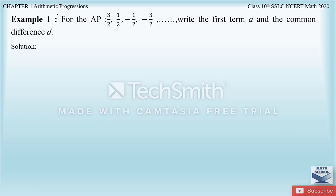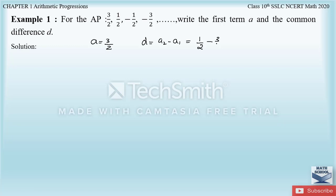Let us solve Example 1 from Chapter 1 on Arithmetic Progressions, which says: for the AP, write the first term a and the common difference d. The first term a is 3/2 as given. To find d, subtract a2 minus a1: that is 1/2 minus 3/2, which equals minus 2/2, or minus 1. So a equals 3/2 and d equals minus 1.